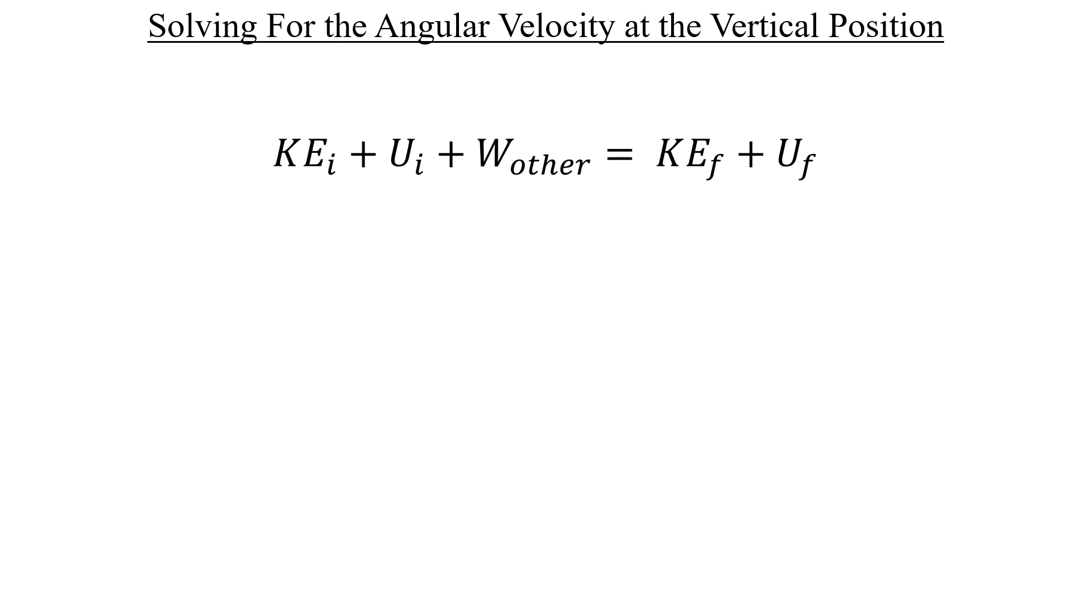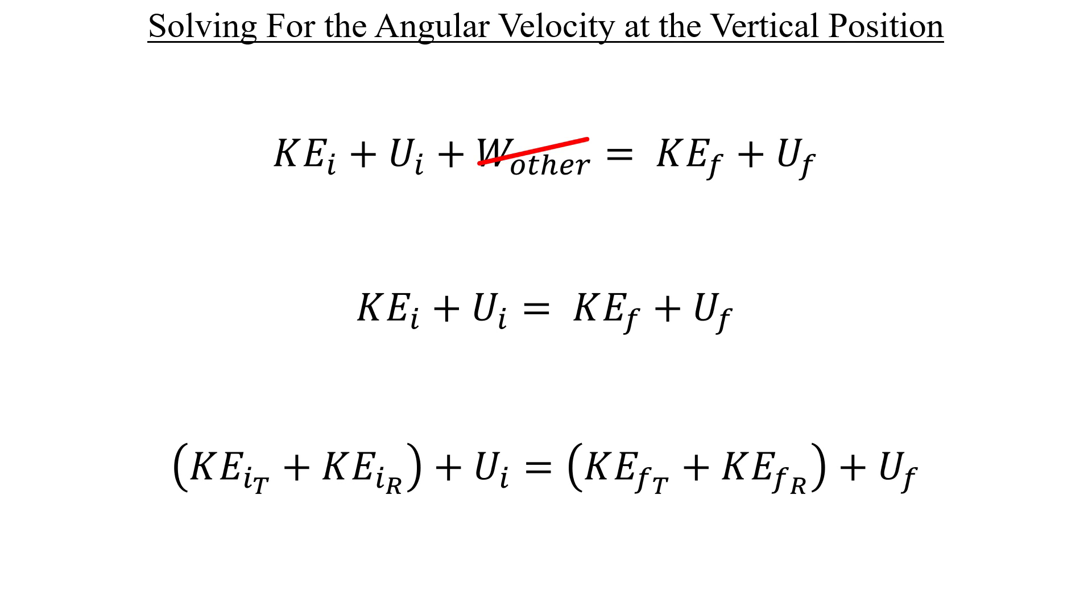Let's start by throwing away this other work term since there's no friction. And I'm going to continue the habit of rewriting our kinetic energy terms to account for translational and rotational motion like this. On the initial side, nothing is moving yet. So the kinetic energy terms over on that side are just equal to zero. On the final side, the translational kinetic energy term can be removed as well since there's no straight line motion occurring here. It's all rotation.